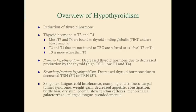Secondary or tertiary hypothyroidism is decreased thyroid hormone due to decreased stimulation of the thyroid. The decreased stimulation can be due to decreased TSH or due to decreased TRH. Remember, TRH comes from the hypothalamus and stimulates the production of TSH. TSH comes from the anterior pituitary and stimulates the thyroid to produce thyroid hormone. Decreased TSH would occur in both secondary and tertiary hypothyroidism, but decreased TRH would only occur in tertiary hypothyroidism.